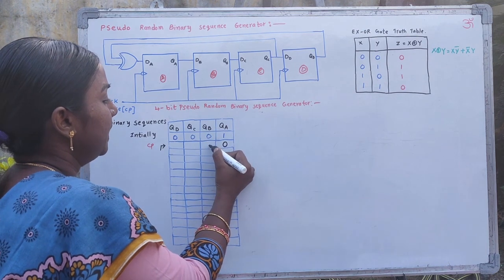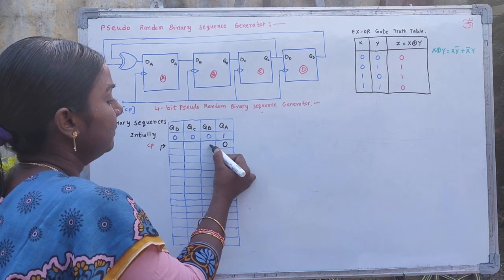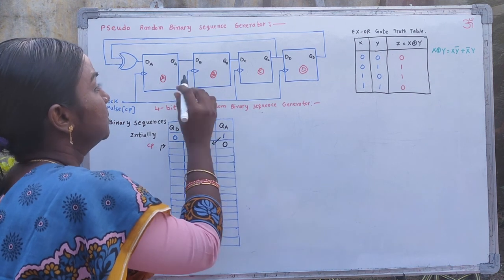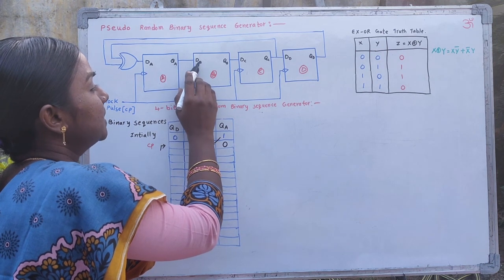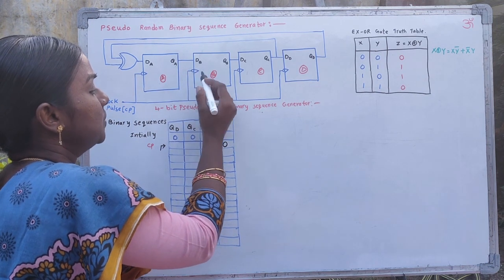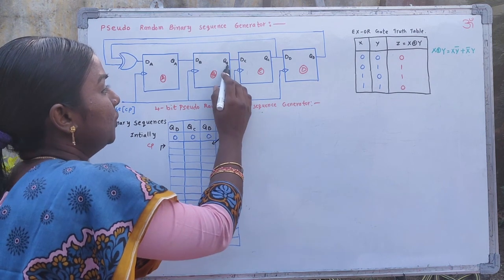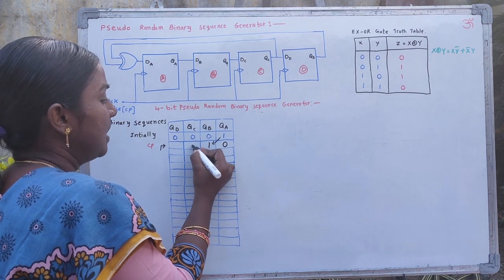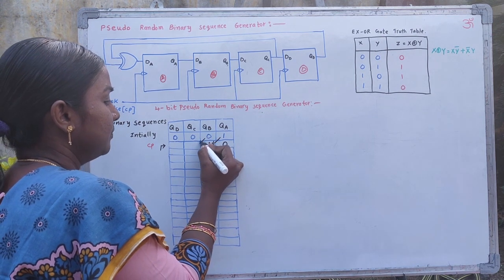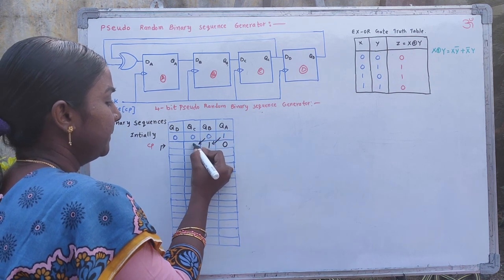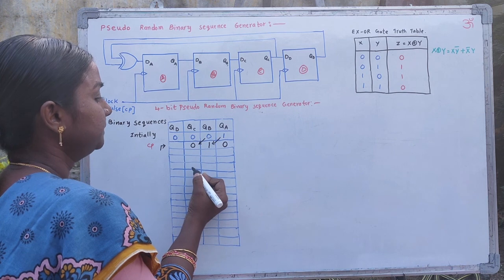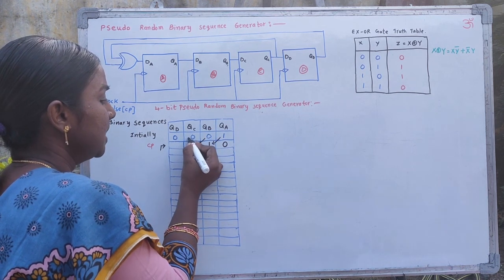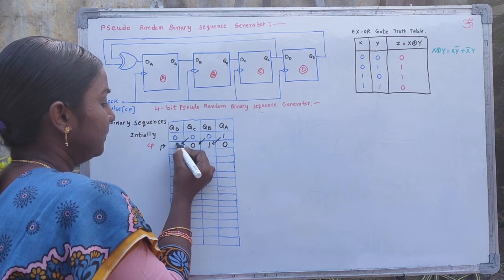After the clock pulse, QB is generated using the previous output of QA. QA is connected to the input of B flip-flop DB, so DB equal to 1 means QB is also 1. Based on this pattern, QC after the clock pulse, from the previous output of QB, is going to be 0. Then after the clock pulse, QD depends on the previous bit of QC, giving 0.